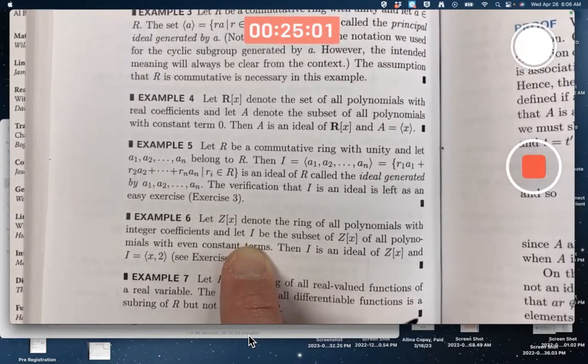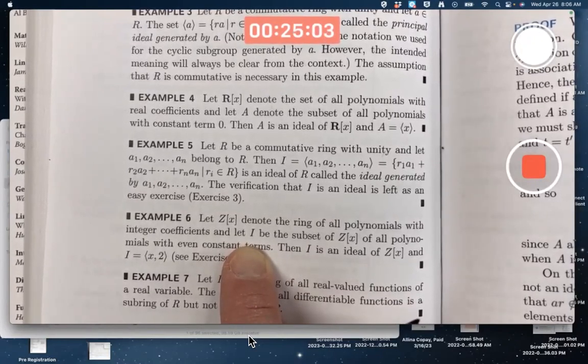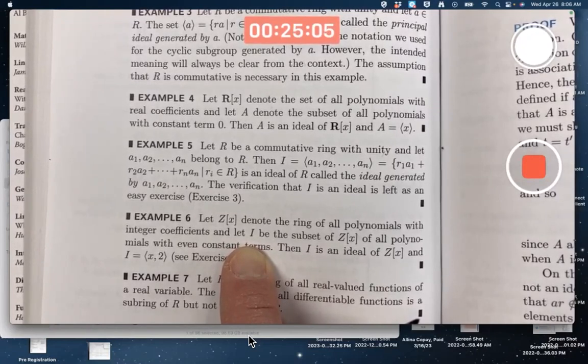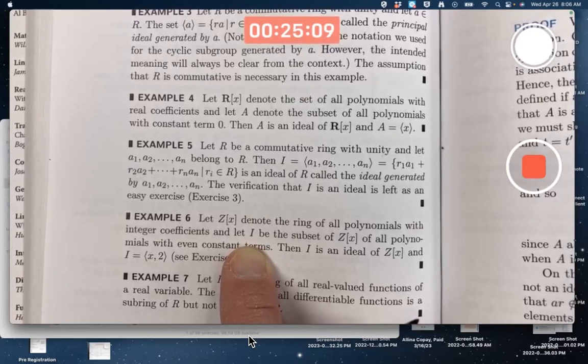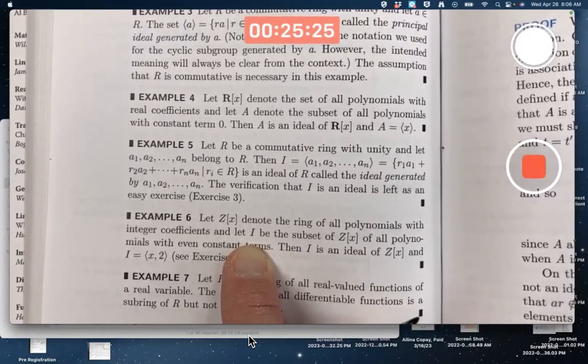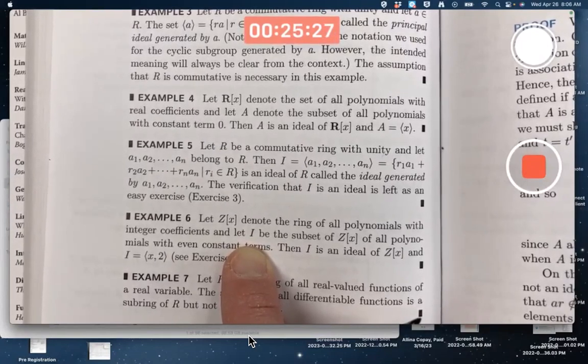I is an ideal, right? If you subtract two polynomials with an even constant term, you will get a polynomial with an even constant term because you subtract like terms, you subtract constant terms. And if you multiply a polynomial with an even constant term by another polynomial, any polynomial, maybe even with an odd constant term, you will get a polynomial with an even constant term because an odd times an even number is an even number.